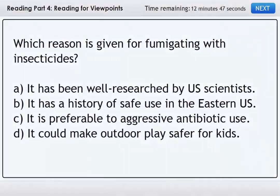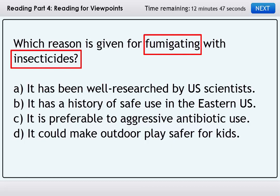Let's look at a question now. Which reason is given for fumigating with insecticides? A: It has been well researched by US scientists. B: It has a history of safe use in the eastern US. C: It is preferable to aggressive antibiotic use. D: It could make outdoor play safer for kids. So it looks like we'd better figure out what fumigating and insecticides mean, since they're important enough to be in a question. We'll need to use the surrounding context here to figure things out.